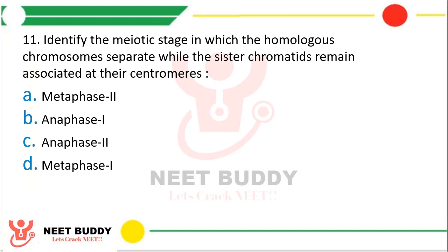Question 11: Identify the meiotic stage in which the homologous chromosomes separate while the sister chromatids remain associated at their centromeres. Options: Metaphase 2, Anaphase 1, Anaphase 2, Metaphase 1. The correct answer is Option B, that is Anaphase 1.